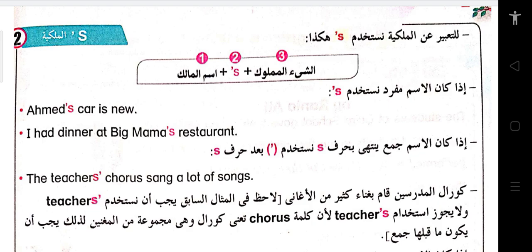الشكل الثاني: إذا كان الاسم جمع وينتهي بحرف S، نضع apostrophe بعد الـ S فقط. مثال: The teachers' chorus sang a lot of songs. Teachers here is plural, that's why we have to add apostrophe after the S. كرال المدرسين قام بغناء كثير من الأغاني.